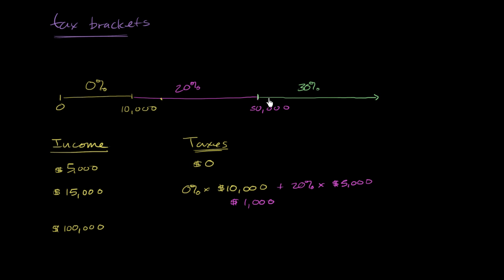Well, it wouldn't be that they're in this last bracket, so they pay 30% on their entire $100,000. They pay 0% on the first $10,000. 0% times 10K for $10,000. Then they'll pay 20% on the next $40,000, this range right over here. So plus 20% times $40,000.